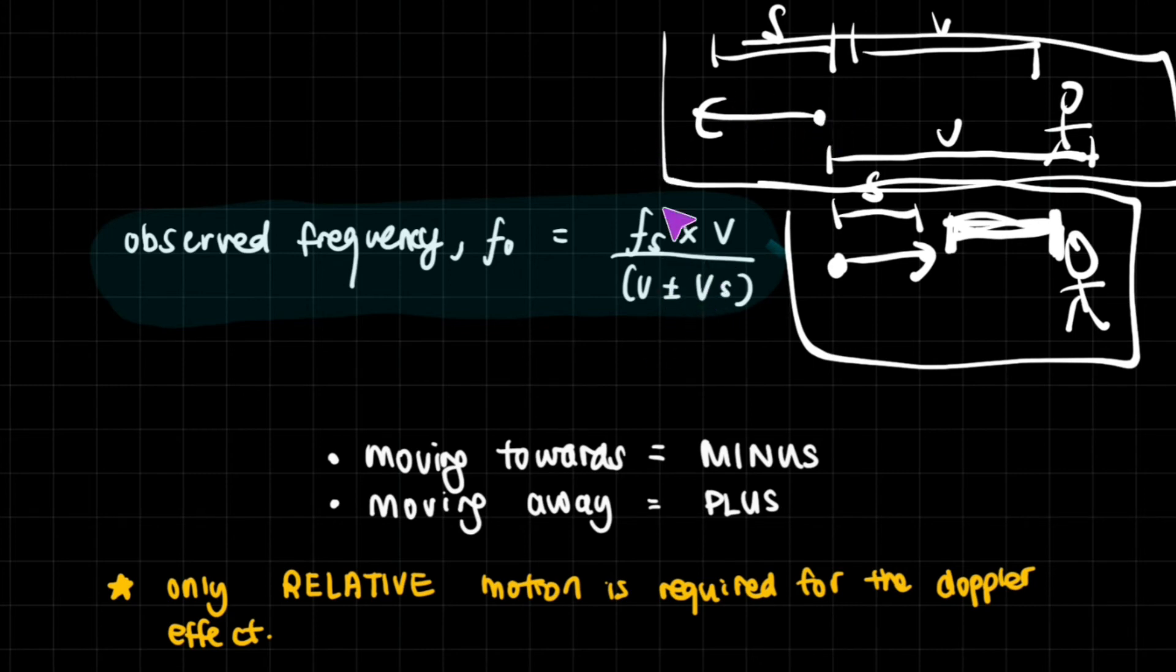However, if the source is moving towards the person, then you have to minus this extra distance from the original distance, because the overall distance between the source and the person is just this amount. So you have to either plus or minus.